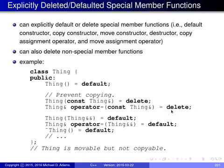Sometimes you may want to explicitly indicate that you want to use the default behavior for one of these special member functions. For example, maybe we want to provide a default constructor with the same behavior the compiler would automatically provide. We can write the declaration and say '= default', and the compiler will provide the automatically generated default constructor. We can do this with other special member functions as well, such as the move constructor and move assignment operator.